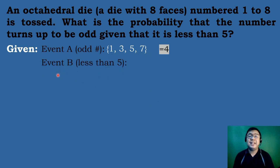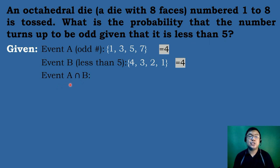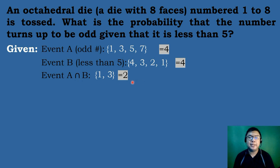For event outcomes of B — the numbers which are less than 5 — these are the numbers 1, 2, 3, and 4. So the event outcome count of B is equal to 4. There are 4 numbers on an octahedral die which are less than 5. We will be looking for the intersection of A and B. Looking at event A and event B, the numbers that occur in both events are 1 and 3. So the intersection of A and B is {1, 3}, and the event outcomes of A intersection B is equal to 2.